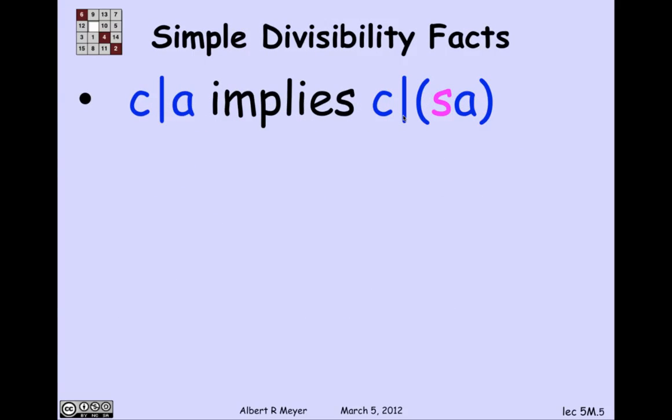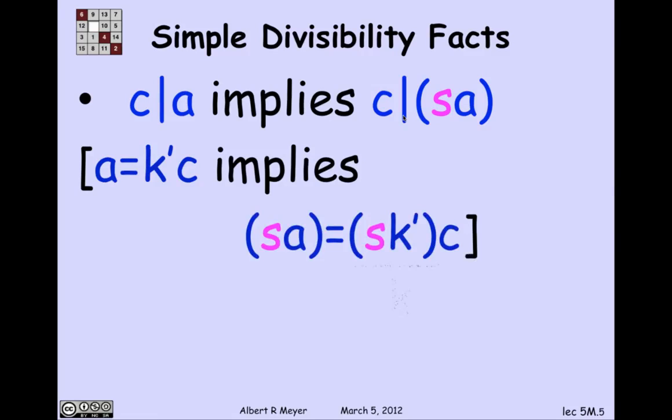Another trivial fact that follows from the definition is that if C divides A, then C divides any constant times A. Well, let's just check that out, how it follows from the definition. If I'm given that C divides A, that means that A is equal to K prime C for some K prime. That implies that if I multiply both sides of this equality by S, I get that SA is equal to SK prime C. And if I parenthesize the SK prime, I can call that to be K. And I've found, sure enough, that SA is a multiple of C. That's a trivial proof. We're just practicing with the definitions.